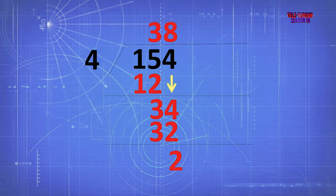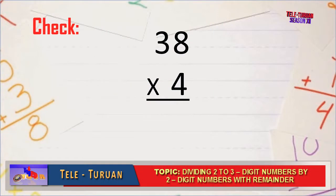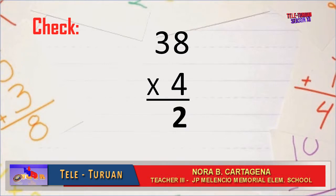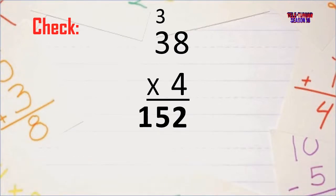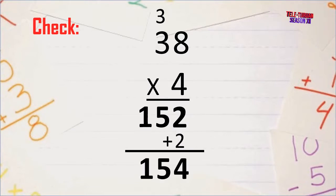The remainder is 2. So the answer is 38, remainder 2. Let us check. Multiply the quotient 38 by 4. 4 times 8 equals 32 — write 2, carry 3. Then 4 times 3 equals 12, plus 3 equals 15. So 38 times 4 equals 152. Plus the remainder 2 equals 154 — the same as our dividend. So our answer is correct.